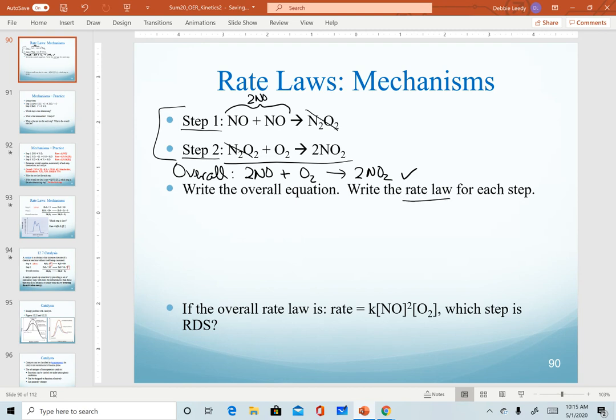Now we're asked to write the rate law for each step. Again, we write the rate law using the original equation. So we ignore any crossing out that we did. For the first step, we have two NO molecules. So I can write it as NO squared or I could write each separate NO molecule multiplied together. For our second equation, we have N2O2 and oxygen. Each of those is first order or has a coefficient of one. Therefore, they are first order. So that is our rate law for each step.